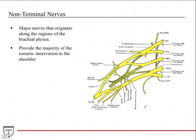Now the non-terminal nerves — nerves that aren't terminations of the cords and can come off any region of the brachial plexus. These provide the majority of the somatic innervation of the shoulder. They're not really doing anything in the arm or further upper extremity; the arm, forearm, and hand innervation comes from the terminal nerves.